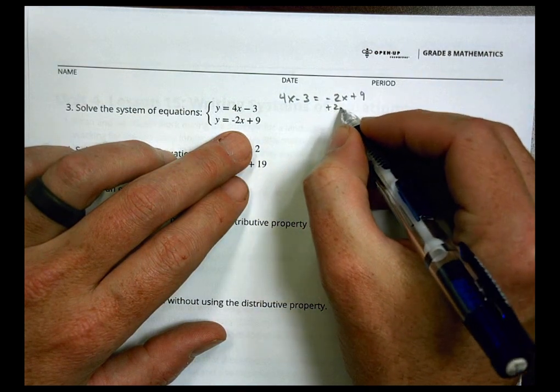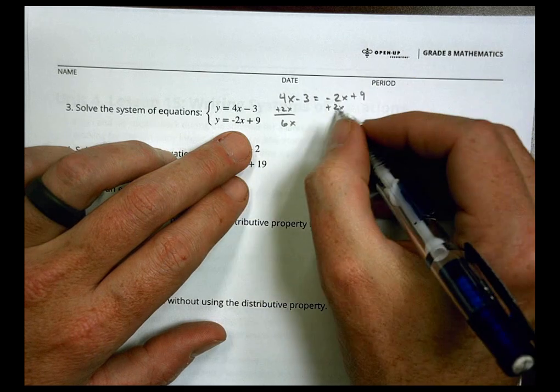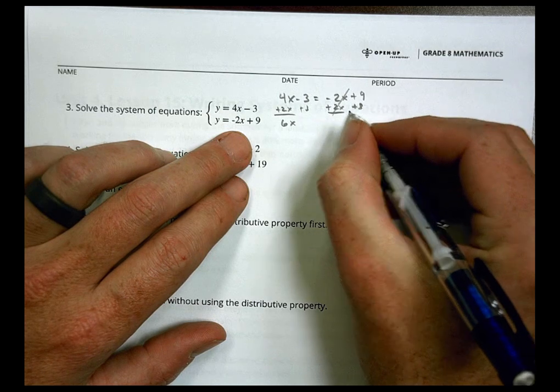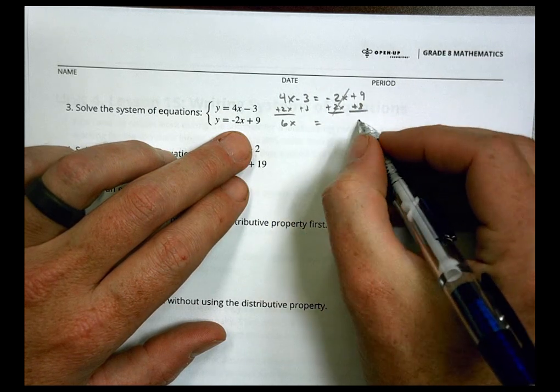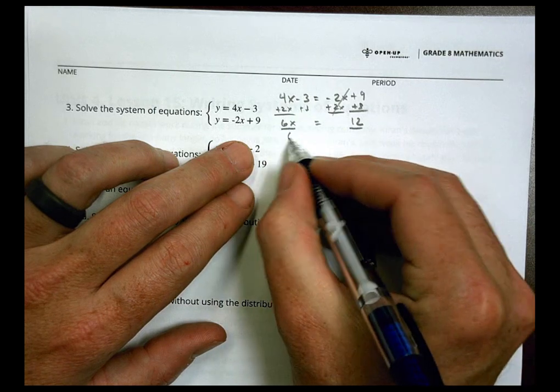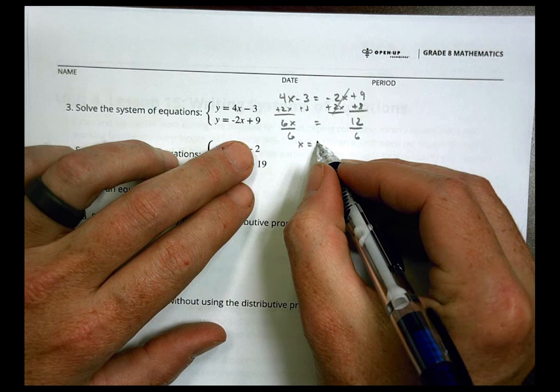I'm going to add 2x to both sides to give me 6x, and I'm going to add 3 to both sides, so 9 plus 3 is going to be 12, so 6x equals 12. I'm going to divide both sides by 6, so x equals 12 divided by 6, which is going to be 2.